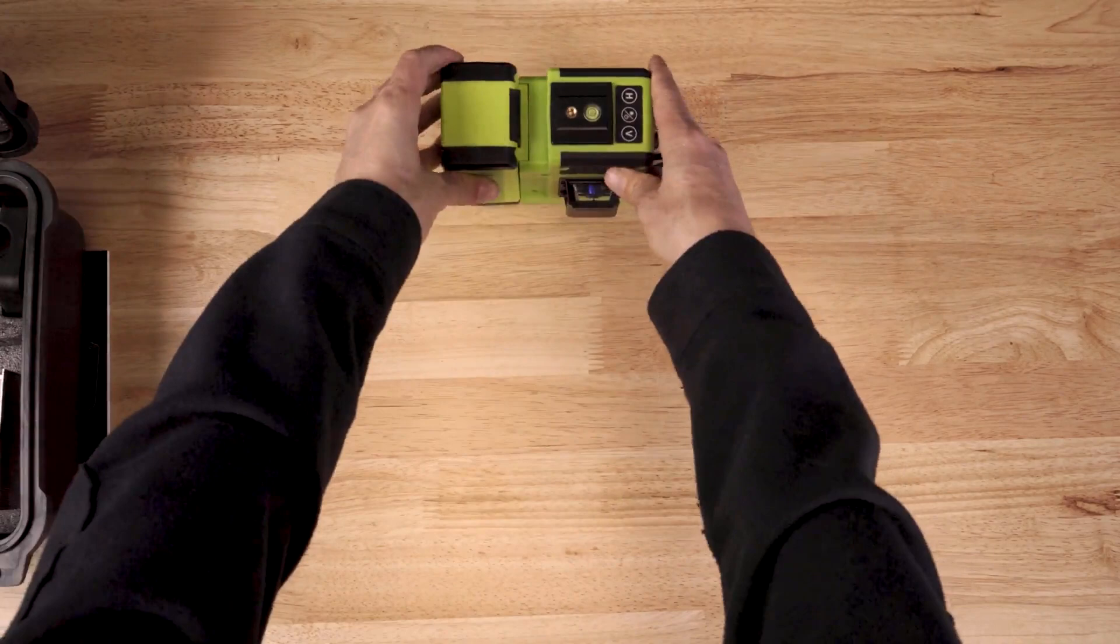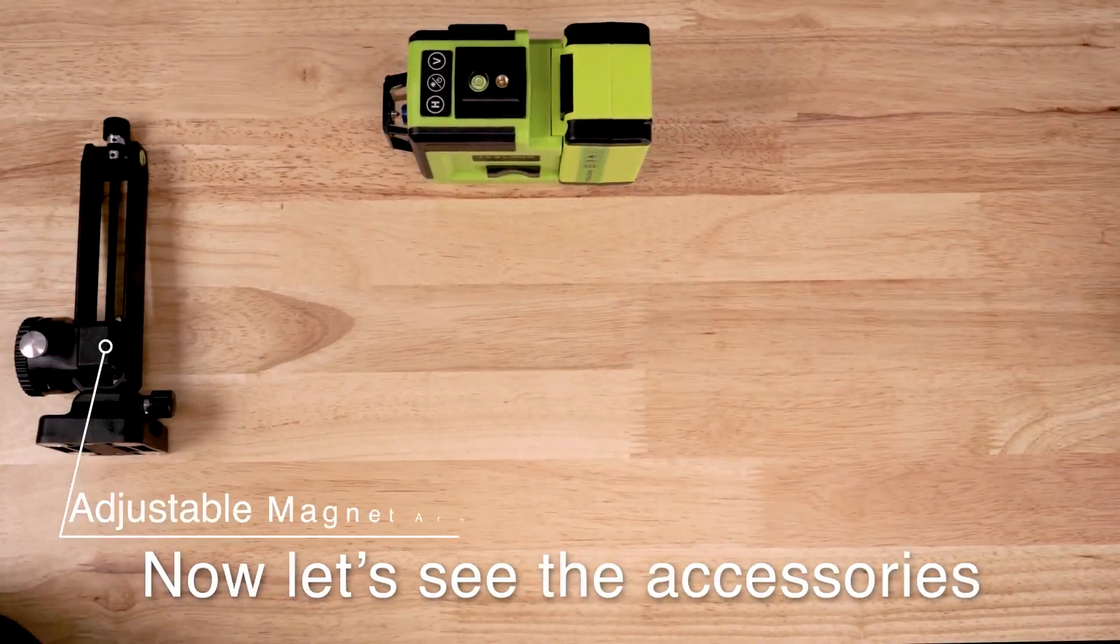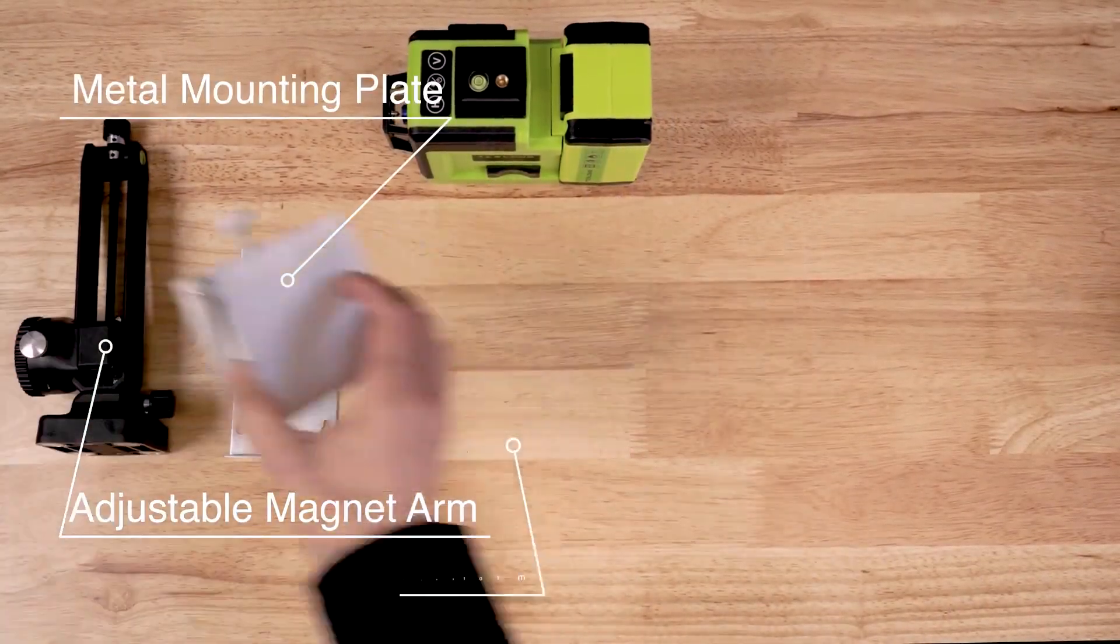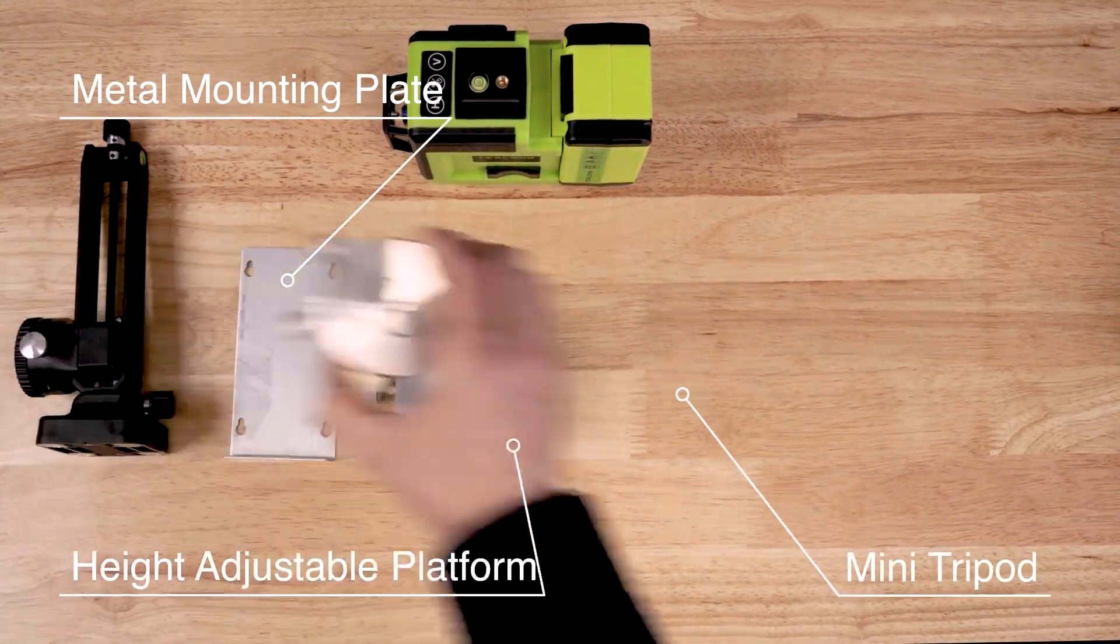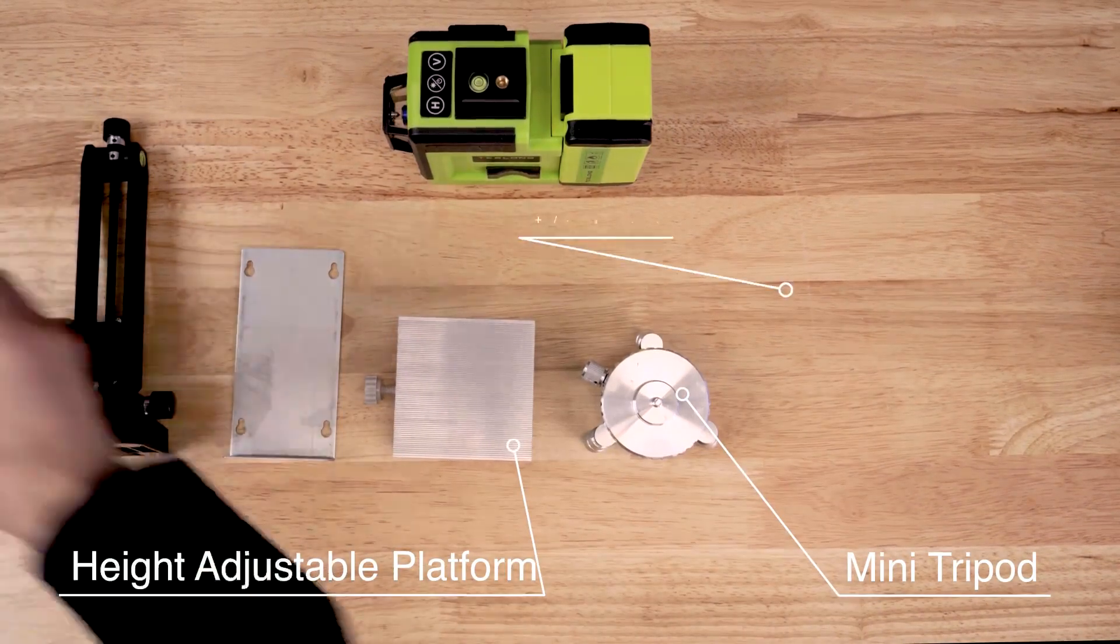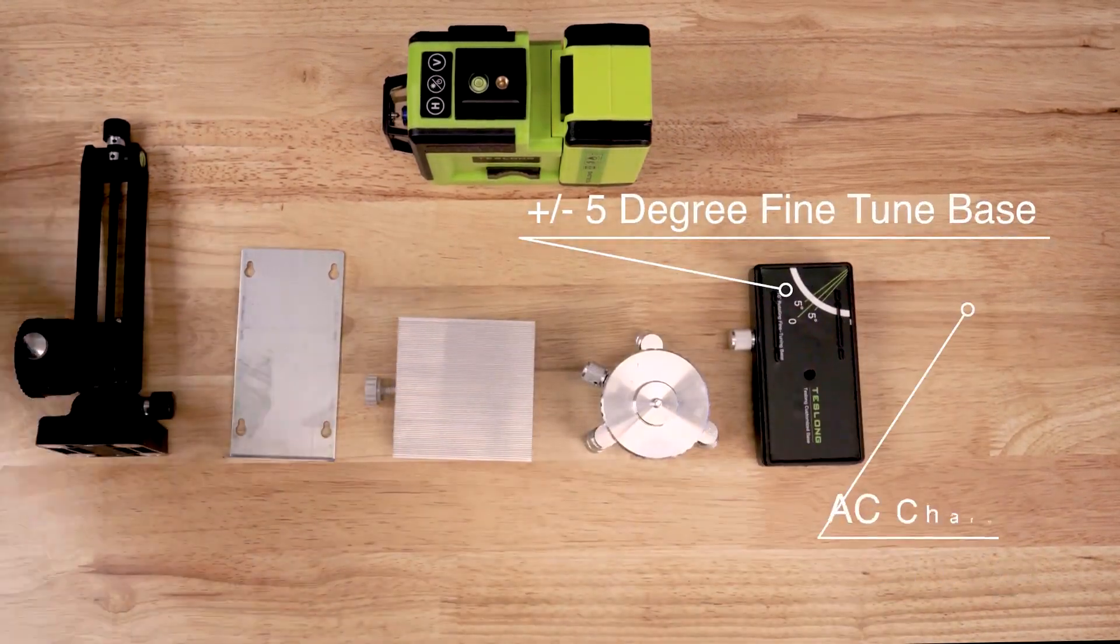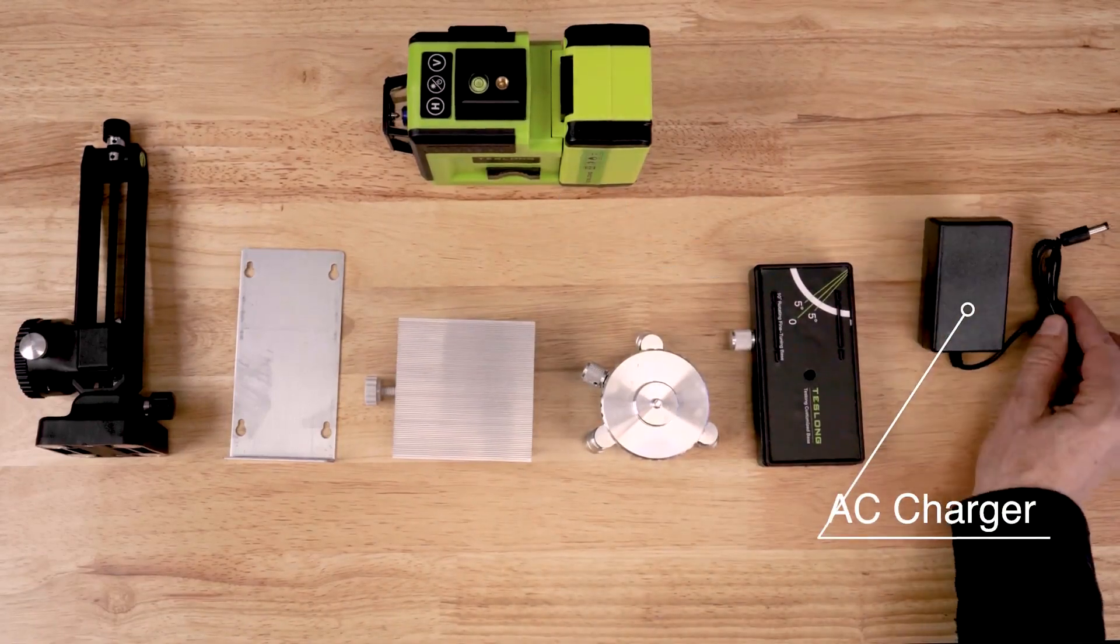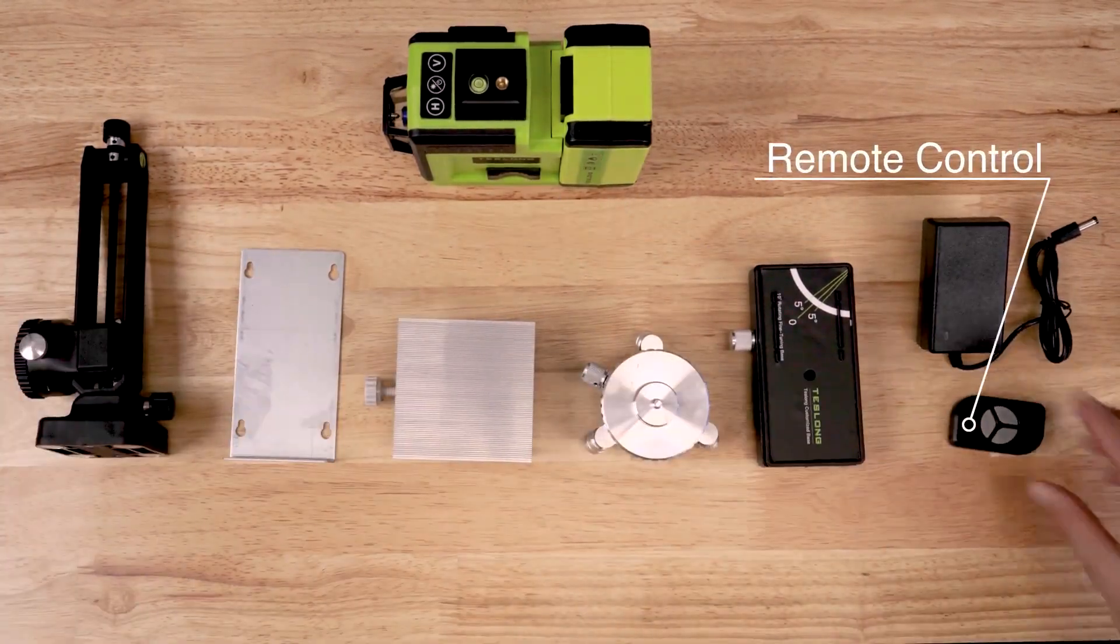Now let's look at the accessories. There's an adjustable magnet arm, a metal mounting plate, a height adjustable platform, a mini tripod, a fine tuning base with plus or minus 5 degrees of adjustment, an AC charger, and a remote control.